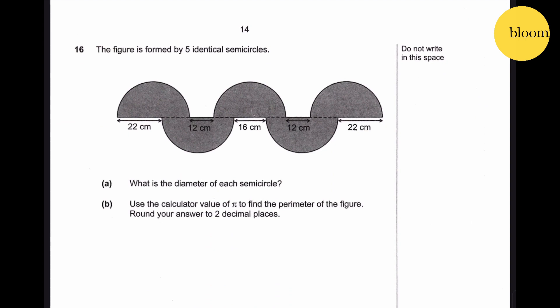Question 16. The figure is formed by five identical semicircles. Part A: What is the diameter of each semicircle? From the diagram, the distance from here to here is exactly this distance. Therefore this is 22 cm. We know this distance is 22 minus 12 which gives us 10 cm.